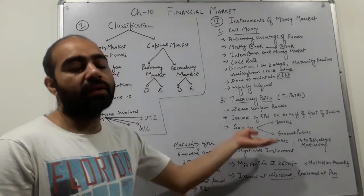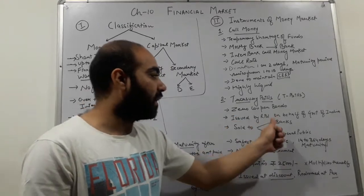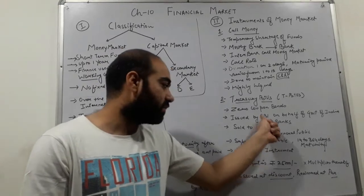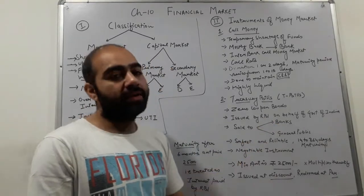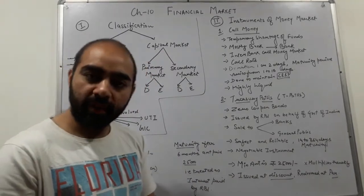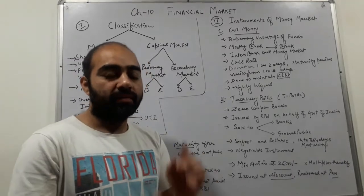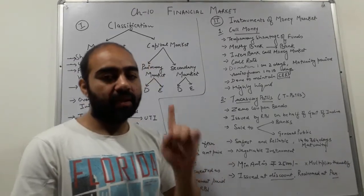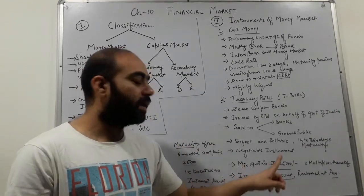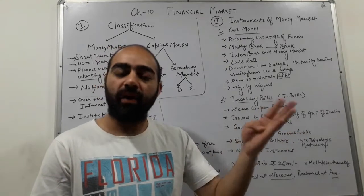Treasury bills are considered the safest and most reliable instrument because they are backed by the Reserve Bank of India, so people rely on this source. They are negotiable instruments, meaning you can transfer them to someone else. The minimum denomination of a T-bill is 25,000 rupees, and amounts are in multiples of 25,000 — for example, 50,000 rupees, 75,000 rupees, 1,00,000 rupees, and so on.